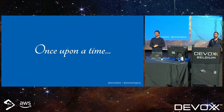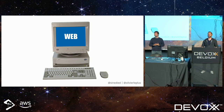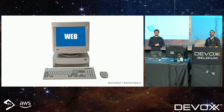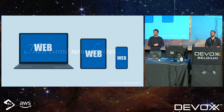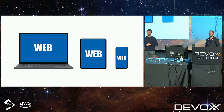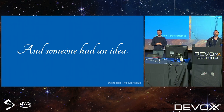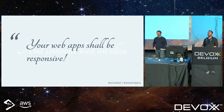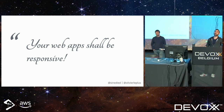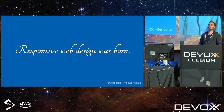Before starting, I'll tell you a bit of a story. Once upon a time, more than 20 years ago, the web was basically only desktop massive devices. Then a few years later came new devices — laptops, smartphones, and tablets — new form factors that we had to adapt our applications to. Around 2010, someone said maybe we should stop developing multiple applications — one for desktop, one for smartphone — and make one application that is responsive. That's how responsive web design was born.